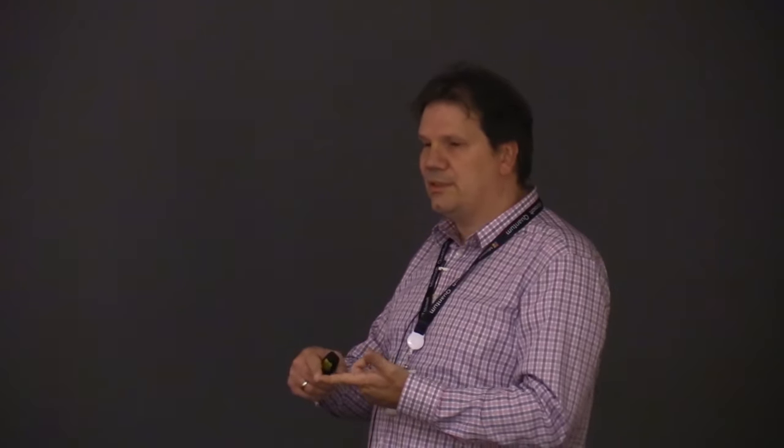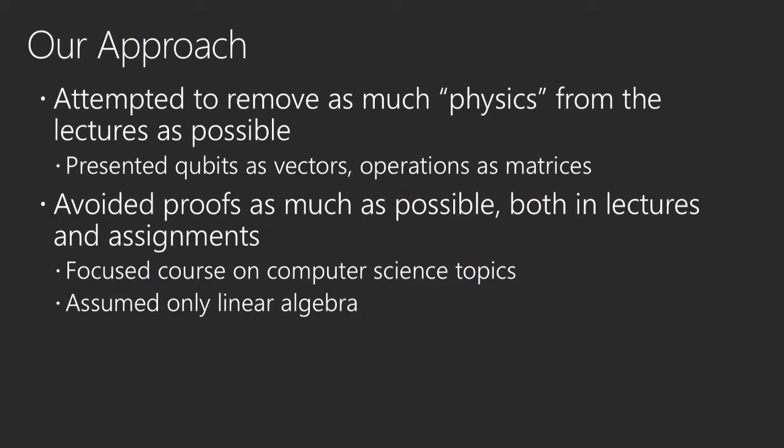We taught in in-person lectures — this was not an online course. People actually went to UW and delivered the lectures. We taught through coding assignments besides the lectures and written homework, so there were three elements: in-person classes, written homeworks, and programming homeworks alternating. We tried to strip as much of the physics out as possible. You can't do it completely, but we presented qubits as vectors and operators as matrices. We tried not to overwhelm people with bra-ket notation too much, and used plain vectors as much as possible.